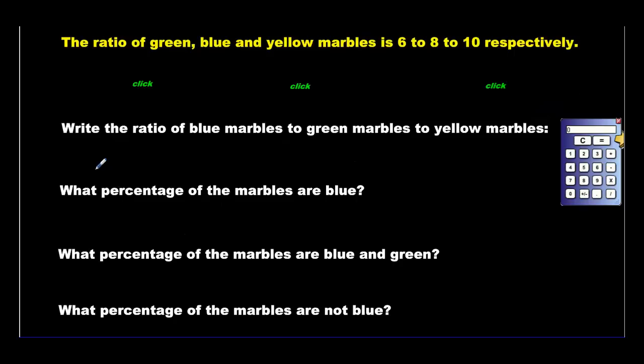The purpose of this lesson is to transform ratios into percents. Here's a ratio of green, blue, and yellow marbles. The ratio of green, blue, and yellow marbles is 6 to 8 to 10 respectively. What does respectively mean? The word respectively means in this order: green, blue, yellow.